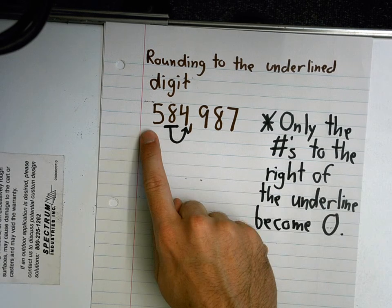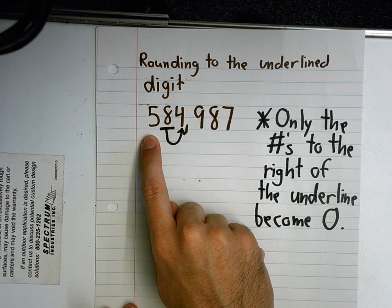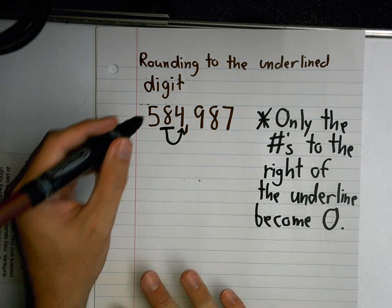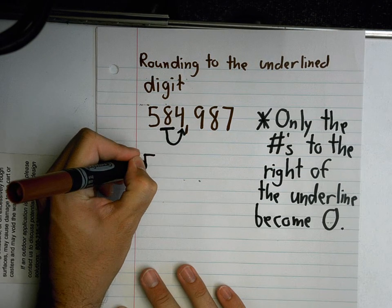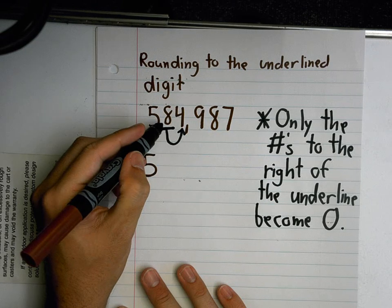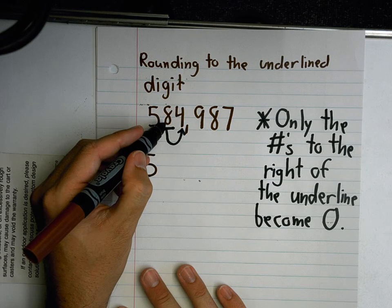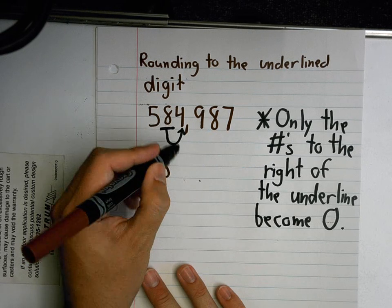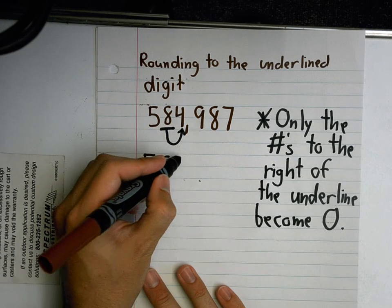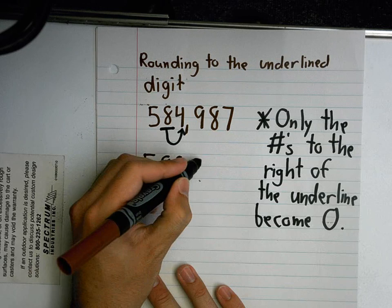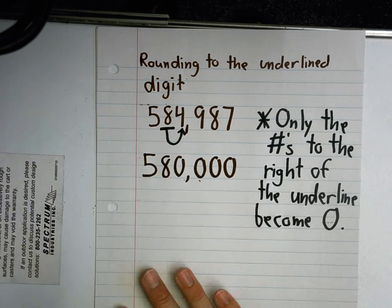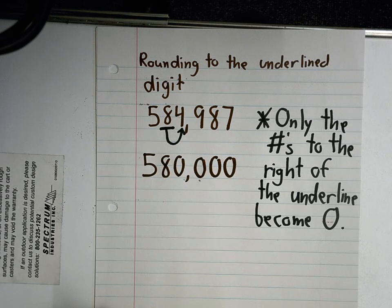These numbers to the left, they stay what they are. So what I have is 500 — and the underlined number stays the same because the digit to the right is only a four — giving us 580,000. These other digits all become zeros. That's what happens when I round to the nearest 10,000.